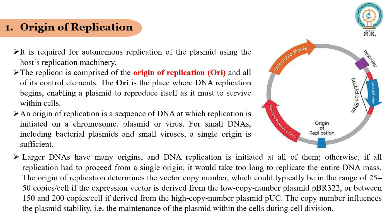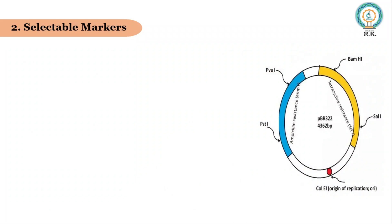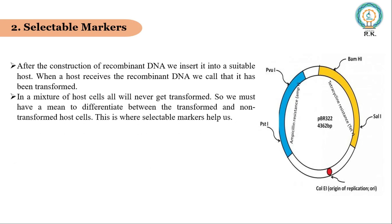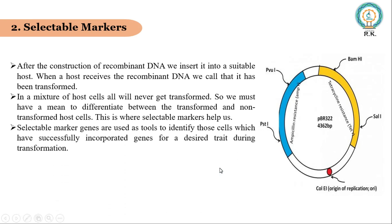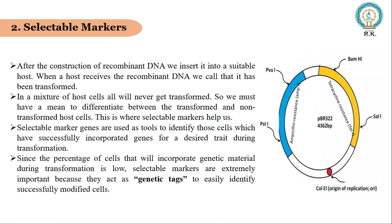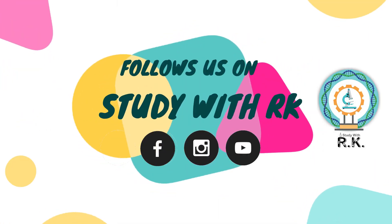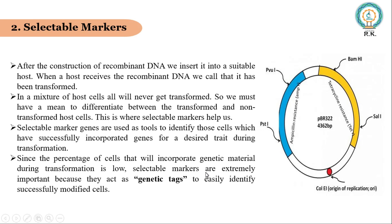The second essential characteristic is selectable markers. Selectable markers enable selection of the transformed cell and are often antibiotic resistance genes like ampicillin resistance and tetracycline resistance genes. In the cloning vector pBR322, the selectable markers are ampicillin and tetracycline resistance genes. They help to differentiate transformed cells from non-transformed cells, and also help to differentiate recombinant cells from non-recombinant cells. Selectable markers act as a genetic test to easily identify successfully modified cells.